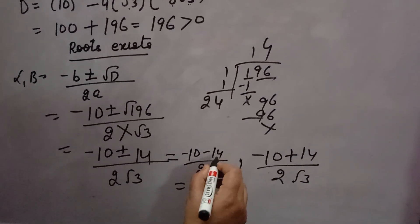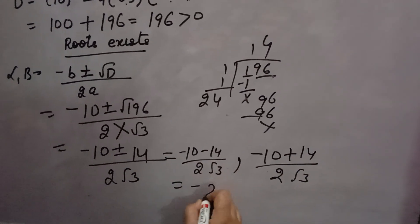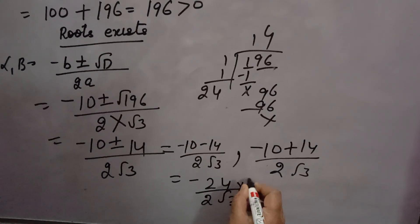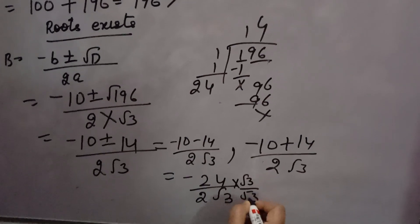Now, minus 10 minus 14. What will come? Minus 24 over 2 root 3. When you will rationalize here, root 3 will come, root 3 will come.